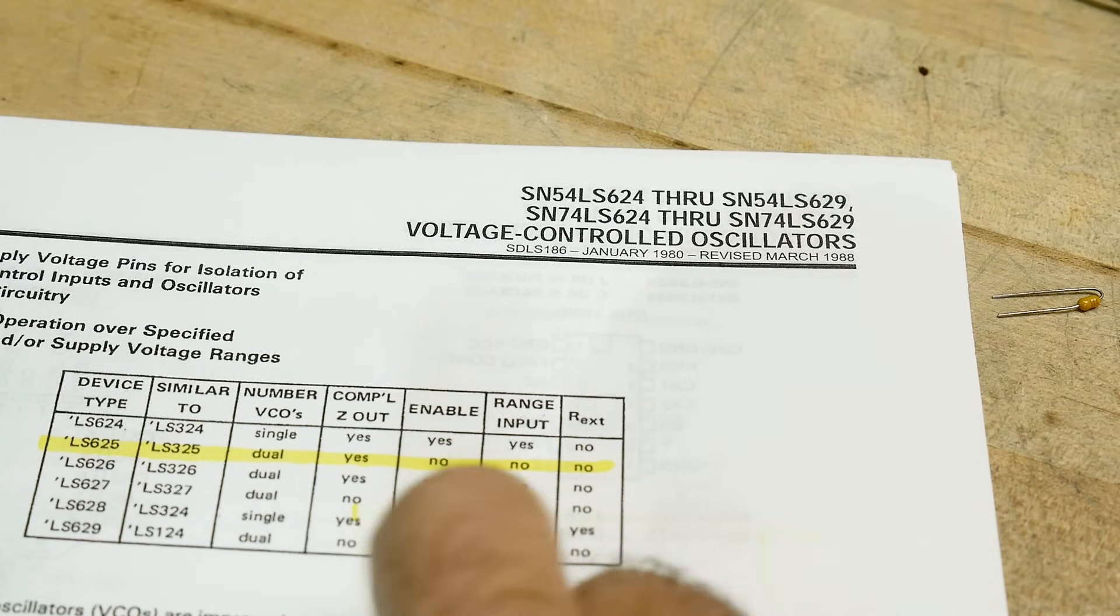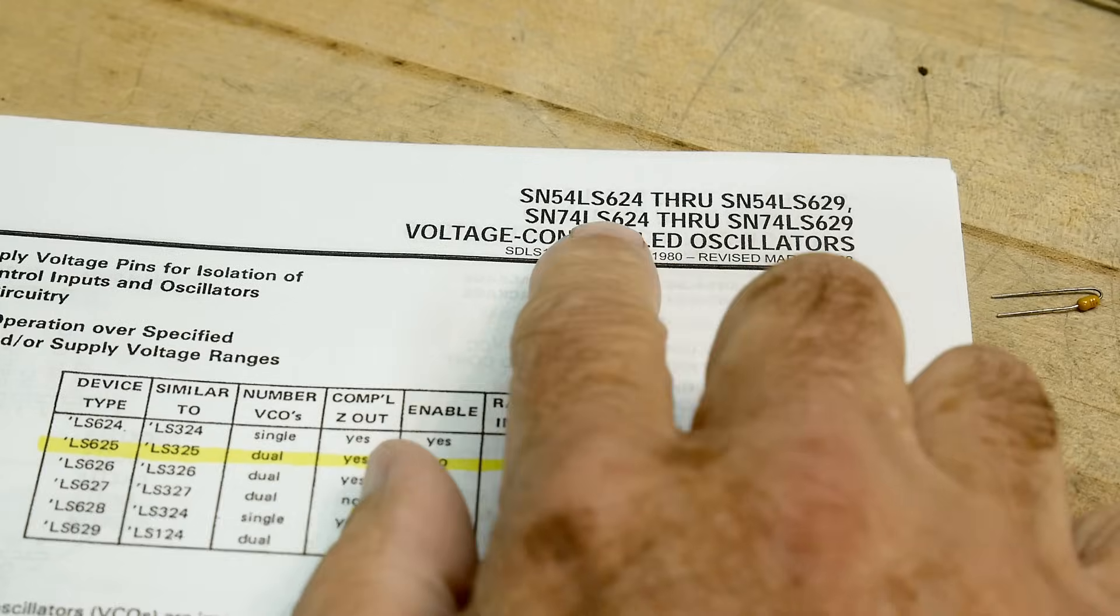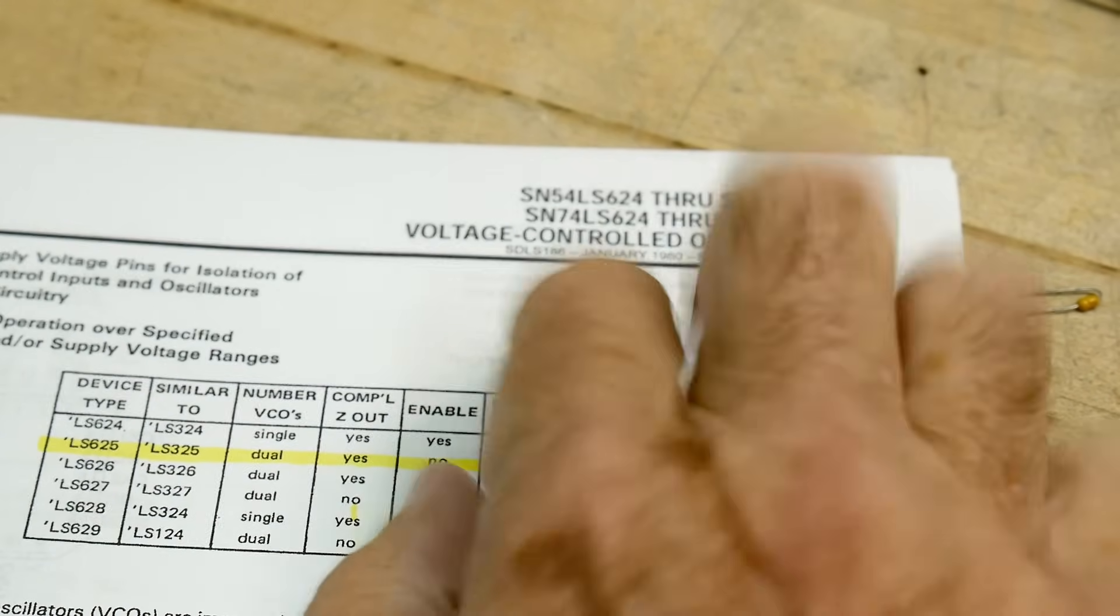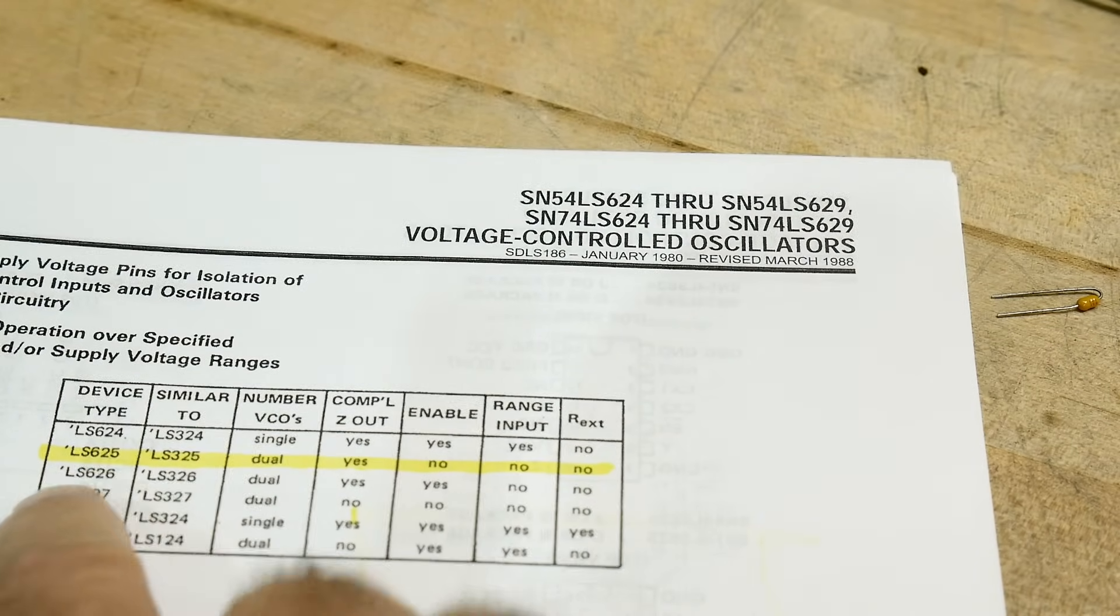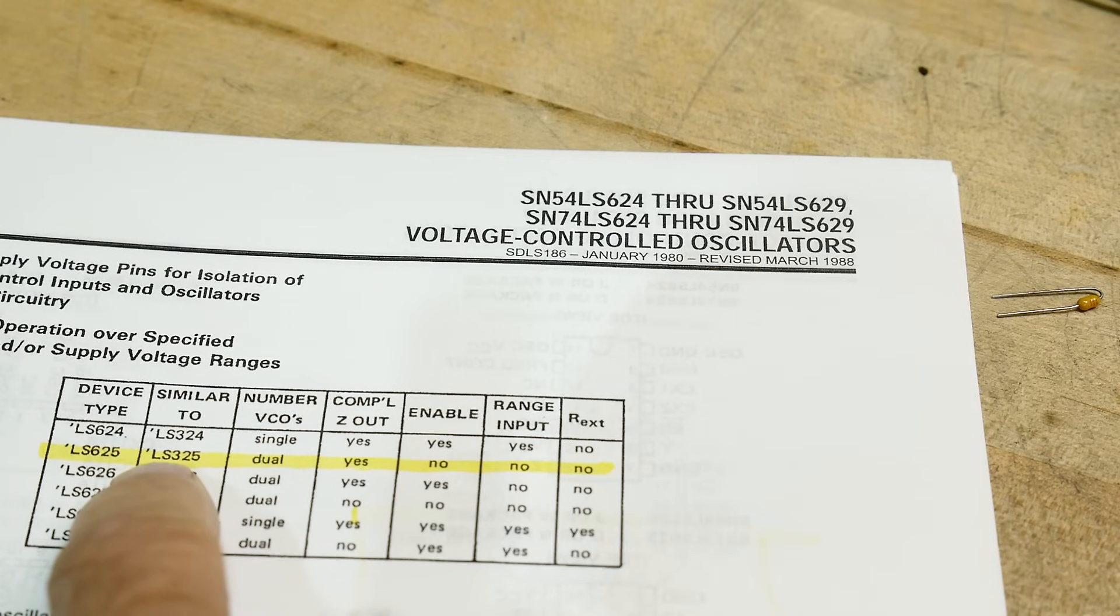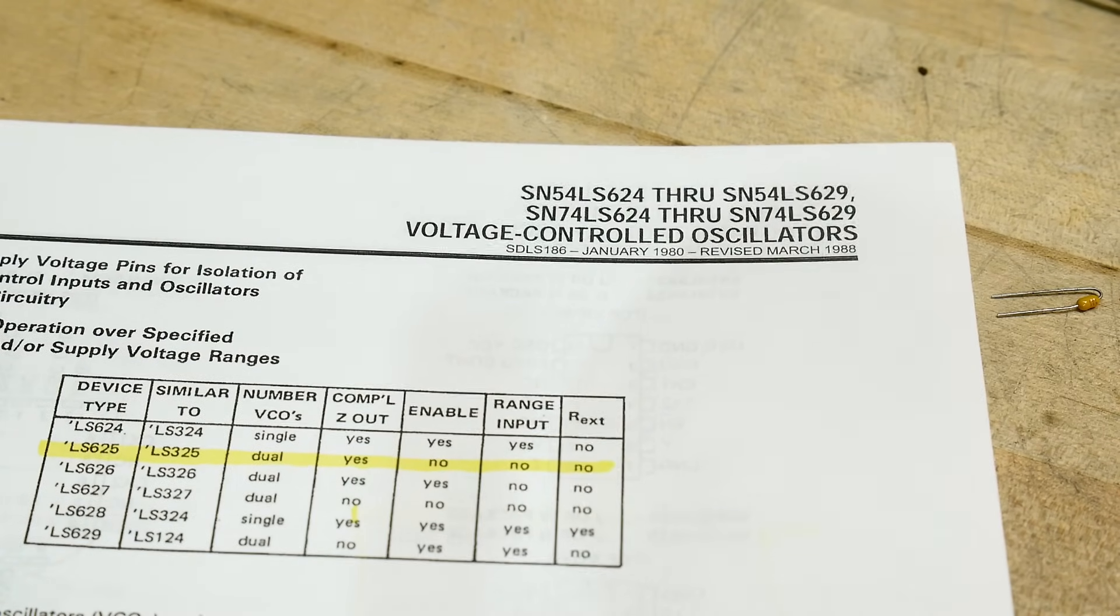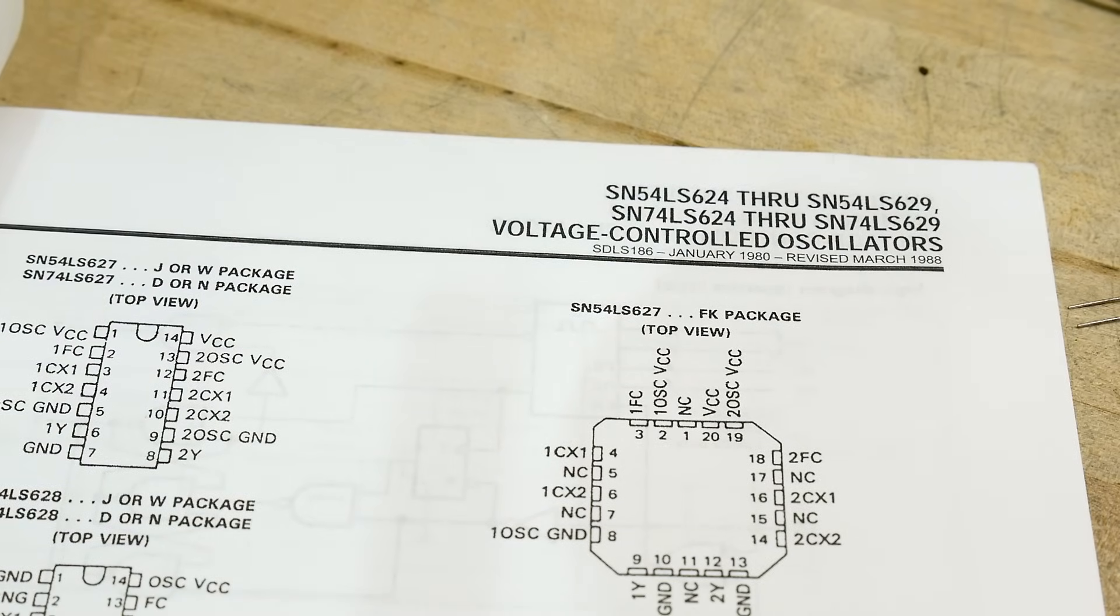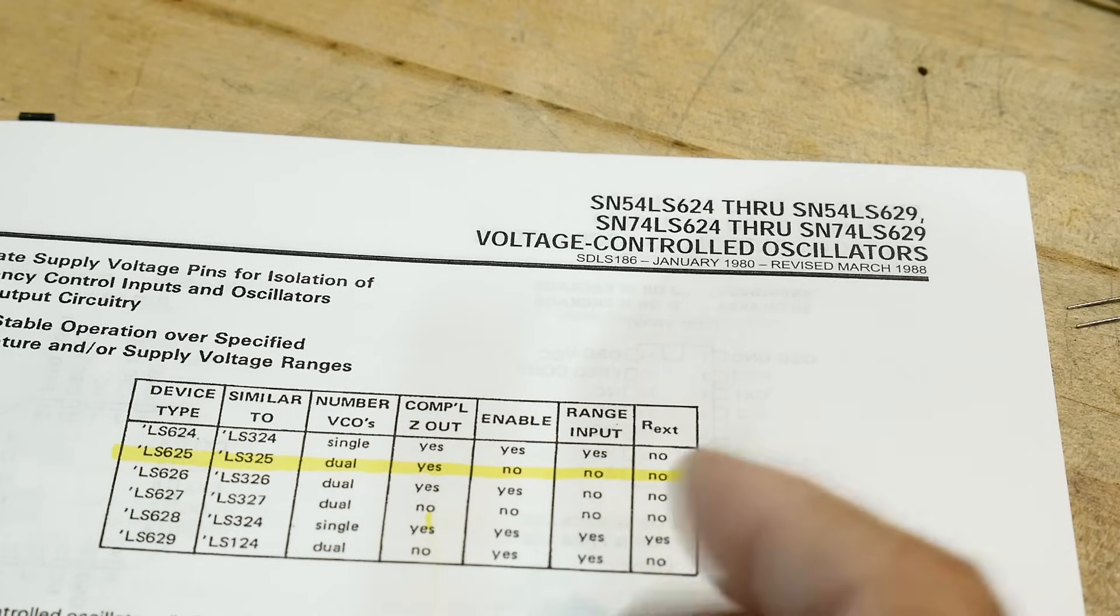All right, chip of the day. This one's a strange one. This is a 74LS625. I have a 625, there's a series of them, but yeah, I have the LS625. It says it's similar to an LS325, which I don't know anything about either. But it is a very strange part. Didn't really know they existed. And it is, let me describe what it is. It's a voltage-controlled oscillator.